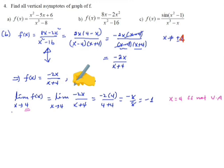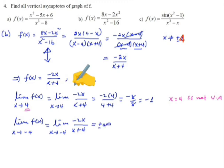Similarly, let us check the limit of f(x) as x approaches minus 4. This becomes the limit of minus 2x over (x plus 4) as x approaches minus 4. If you directly substitute minus 4, it becomes undefined. But whenever x gets closer and closer to minus 4 from different directions — from the right and from the left — you will get plus or minus infinity depending on the direction. Therefore, x equals minus 4 is a vertical asymptote.